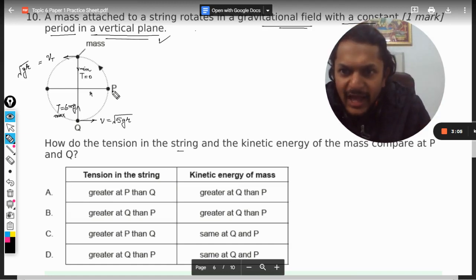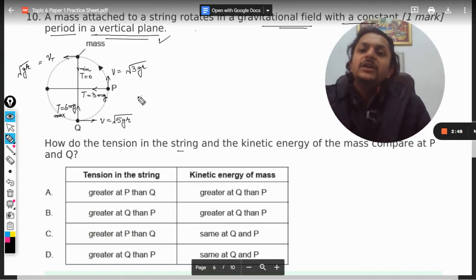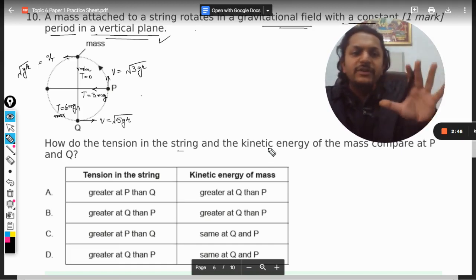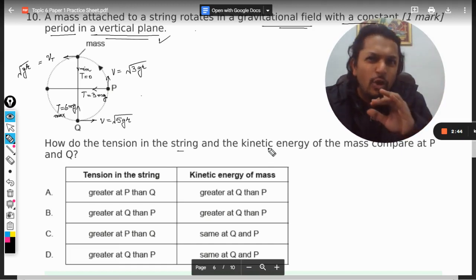At this point, the velocity vector is to the side, and here the velocity is given by √(3gr). The tension here is like this, and the tension will be equal to 3mg.